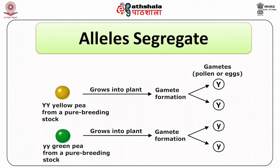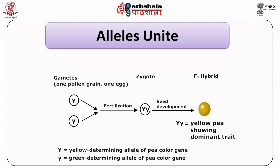The paternal and maternal chromosomes get separated in meiosis and the alleles with the traits of a character are segregated into two different gametes. Each parent contributes a single gamete and thus a single randomly selected allele copy to their offspring at fertilization. The given image shows how Mendel's second law — alleles segregate and once again unite — works. The first figure shows that the alleles of yellow and green from pure breeding plants segregate from each other during gamete formation, whereas the second figure shows that during fertilization the segregated alleles unite with each other and lead to the development of a seed.